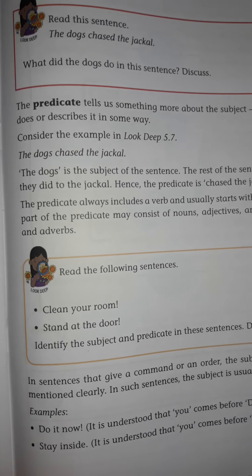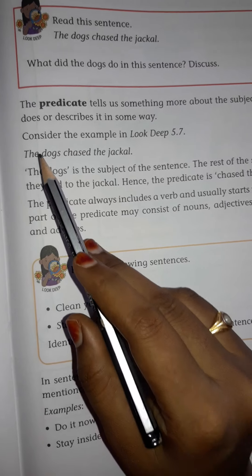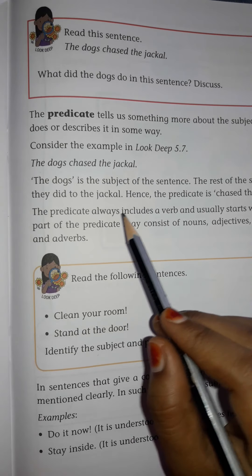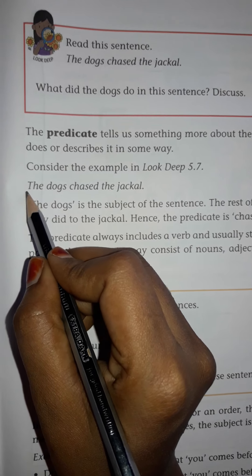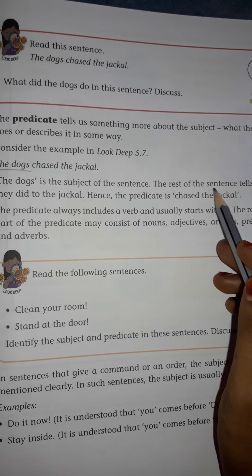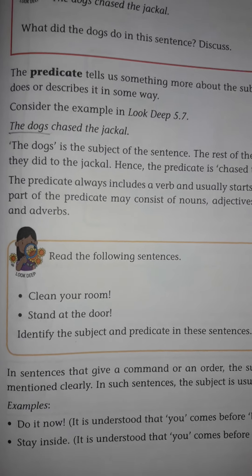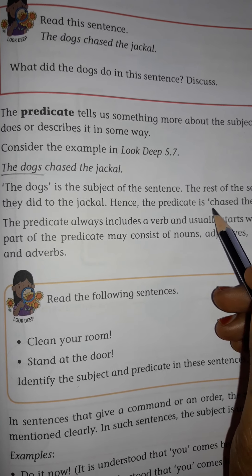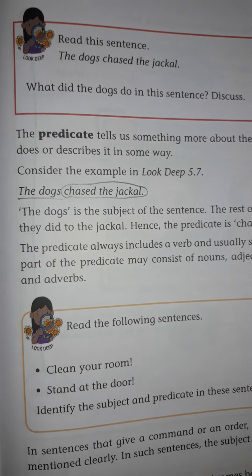That part which tells what the subject does or describes can be called the predicate. In the sentence 'The dog chased the jackal,' the dog is the subject because it is the dog who chased the jackal. The rest of the sentence tells us what they did. Hence the predicate is 'chased the jackal.'